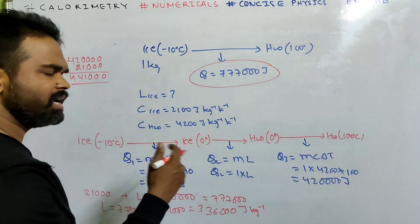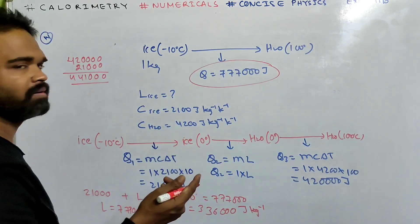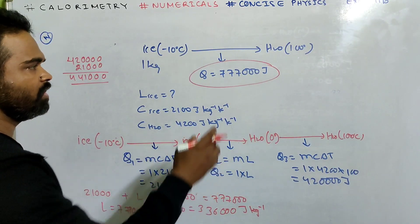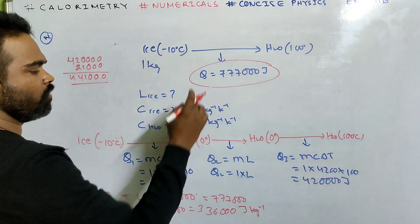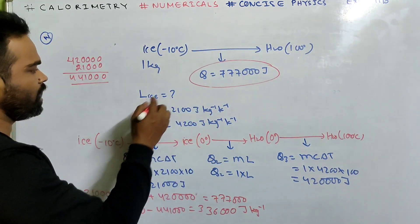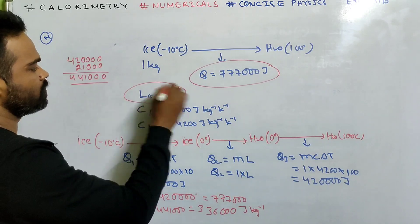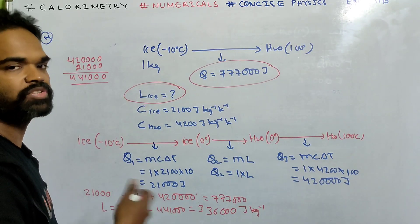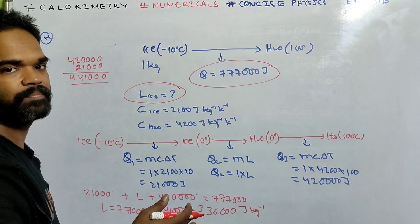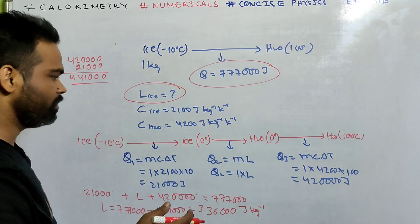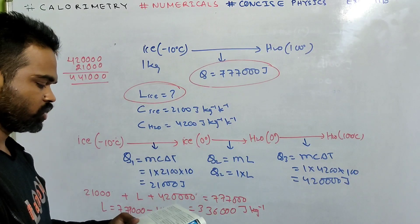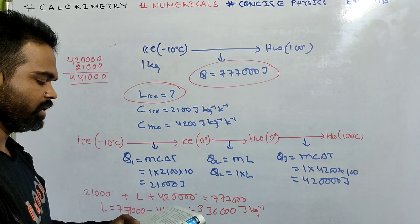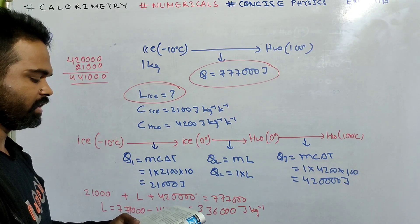In sum 13, we got the total heat and everything was given. Here, the quantity unknown was L of ice. The process remains the same. Now we'll do sum number 15.